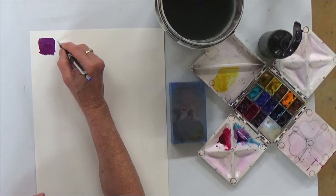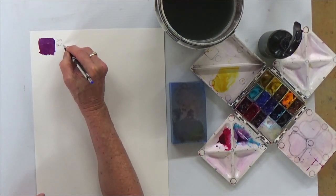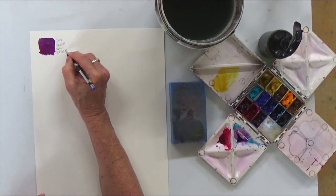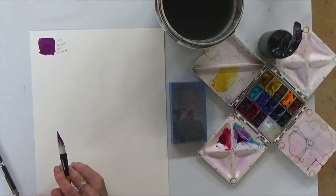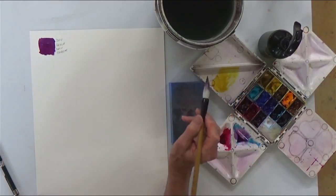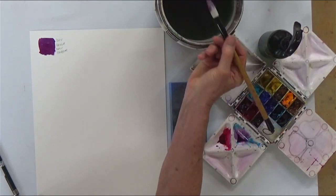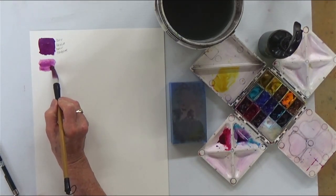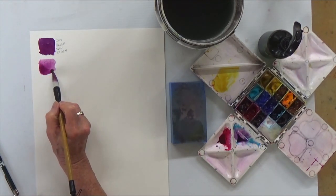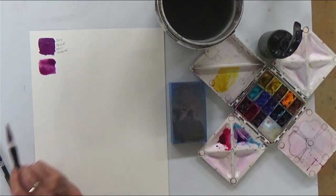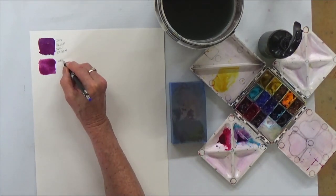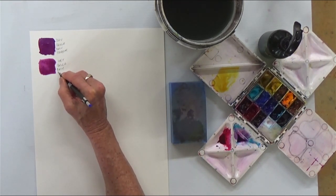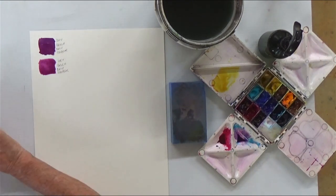I'll just write there dry brush and dry paper. So the next one is going to be wet brush on dry paper. Same tone exactly. I've got loads of water. So you can see how the difference is. That just skates across the surface of the paper. So that's wet brush, dry paper.